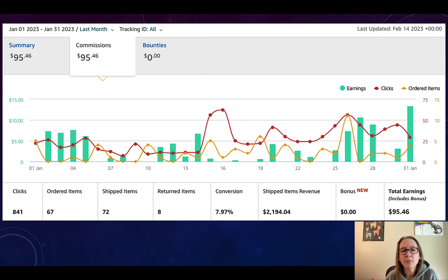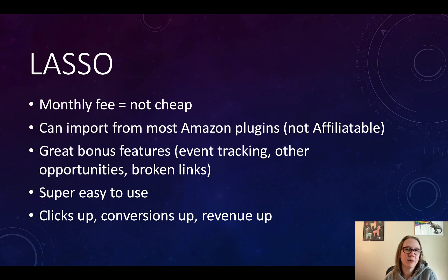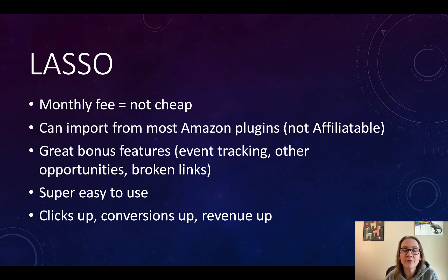Quick sidebar: the screenshots I'm showing you from Amazon are for one of my accounts where I only have a single site on it, so even though it says "tracking ID all," it's only for one site. Next up, I started testing Lasso. I had initially not wanted to use it because it has a monthly recurring fee, so it's not as cheap as other options — and with so many sites I wasn't sure it would be a good buy. But I was able to test it for free for a month. I discovered that you can actually import from most Amazon plugins into Lasso, including most things from AAWP, though unfortunately not from Affiliate Table.